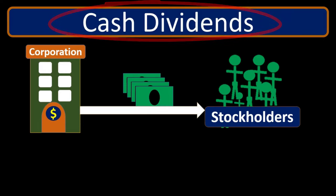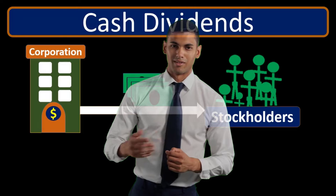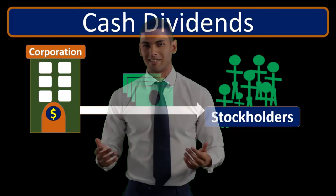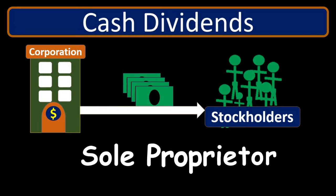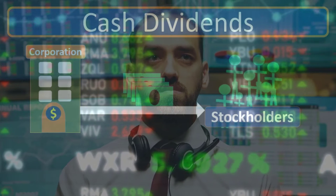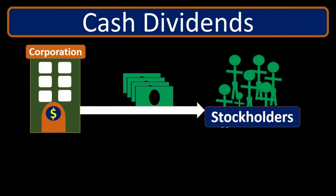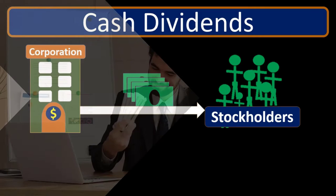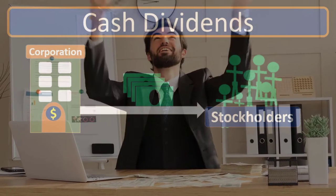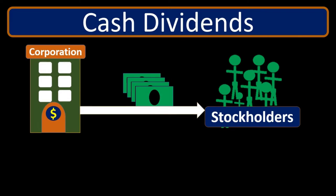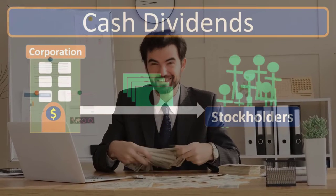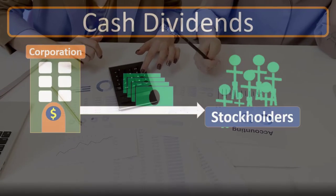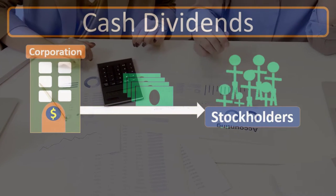There are some very big and significant differences between dividends and draws. If you're a sole proprietor, you start the business with an initial investment, hope to generate revenue, and then start taking money out. When a sole proprietor or partner takes money out, we call that draws or withdrawals. It's not an expense of the business — it comes out of the capital account and doesn't reduce net income. It's just money we're taking out, keeping the business separate so we can track business performance and personal spending.